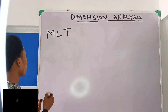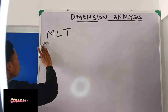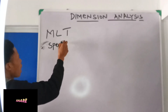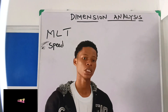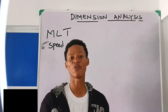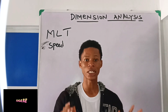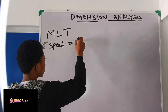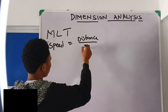You can be given something like speed and asked to find the dimension of speed. Anytime you are asked to find the dimension of anything, the first thing you have to do is know the formula of that thing. If you know the formula, you can get your answer. So speed — you know speed is distance over time.